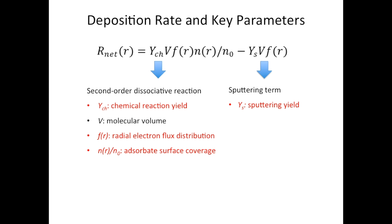The next part is the focus of my presentation — it's about deposition rate and the key parameters controlling the rate. Here is a general expression for the deposition rate. It has two terms. The first one corresponds to the second order dissociative reaction, and it's proportional to both the electron density and the adsorbate surface coverage.